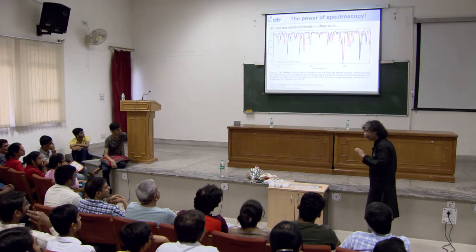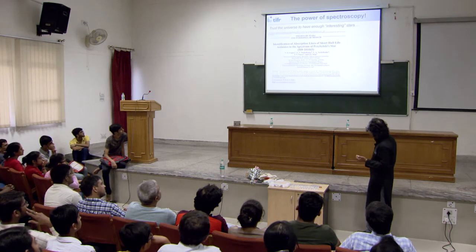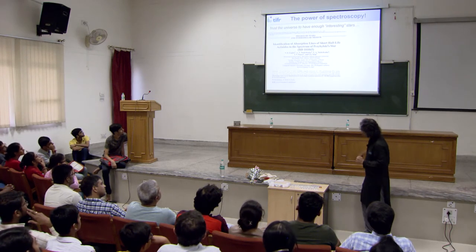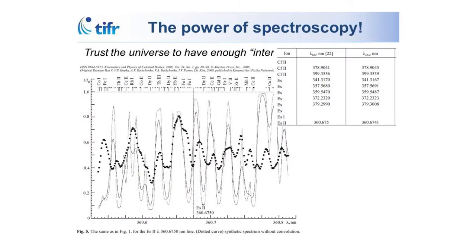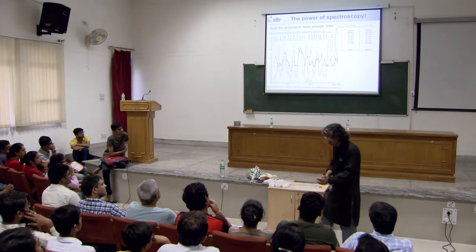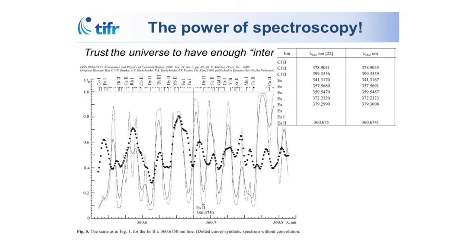Trust the universe to be a very interesting place — there are lots of weird stars. There are stars with unpronounceable names like Przybylski's Star, in which they have done high-resolution spectroscopy. In just one angstrom of wavelength around 3606-3607 angstroms, you see lines of elements like Californium and Einsteinium — elements which we think are not natural elements on Earth. On Earth we said up to uranium — element 92 or 93 maybe — but here you're seeing Einsteinium and Californium in the spectra of stars.